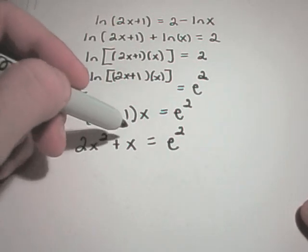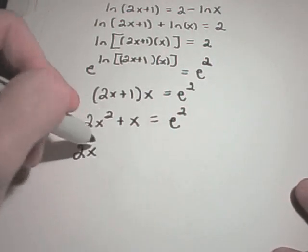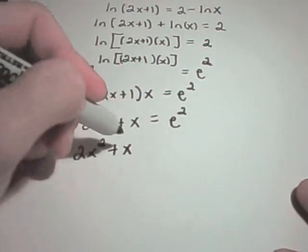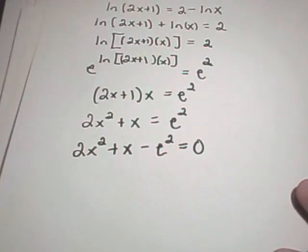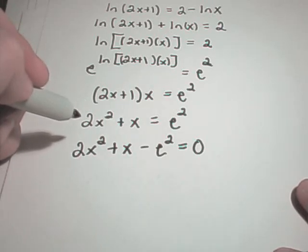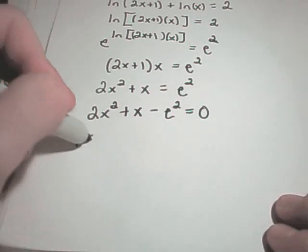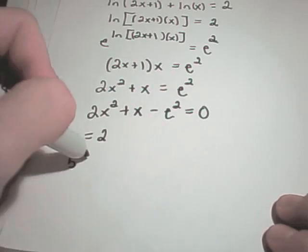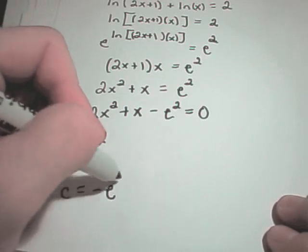And this is now a quadratic equation. I've got an x squared. I've got an x to the first power and just a number floating around. So to solve quadratic equations, remember, we set those equal to 0 and try to factor them. Maybe this one factors pretty easily, but I don't see it off the top of my head. So on this one, I'm going to use the quadratic formula. And in this case, a is equal to 2, b is equal to 1, c is going to be equal to negative e squared.